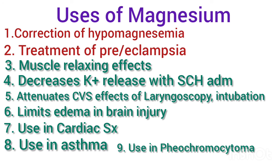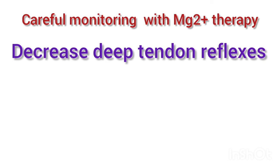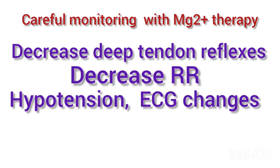The arteriolar dilating effects combined with reduction in catecholamine release may be beneficial in patients with pheochromocytoma. Whenever magnesium is administered for therapeutic purposes, careful monitoring for signs of hypermagnesemia must be done — including decreased deep tendon reflexes, decreased respiratory rate, hypotension, or ECG changes — so that hypermagnesemia does not occur.